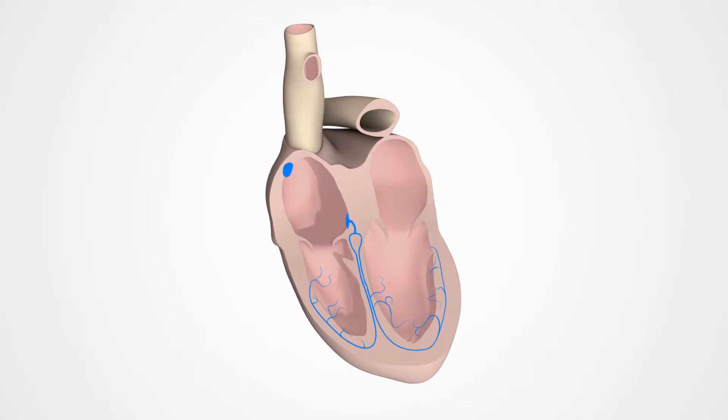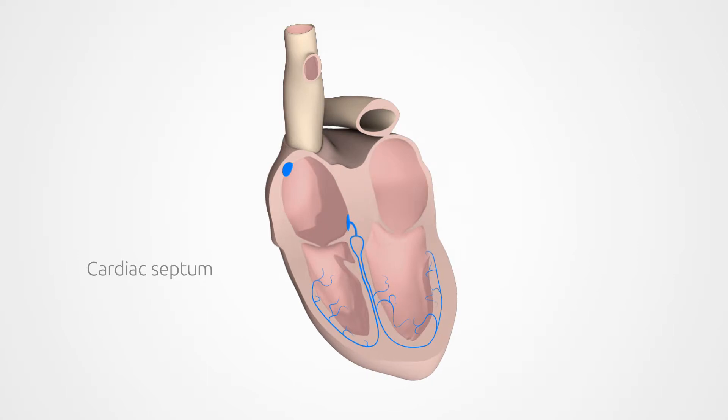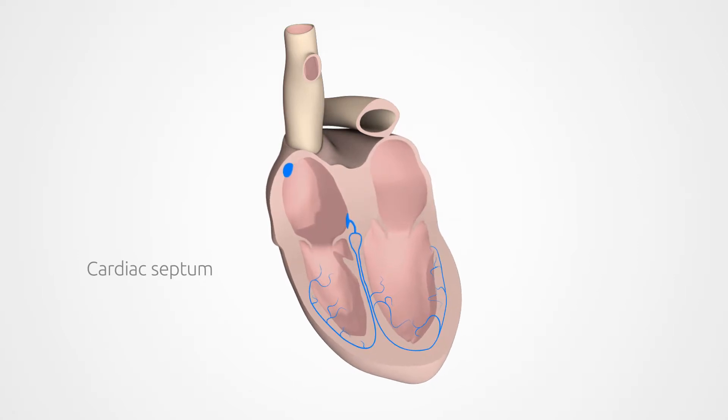A wall known as the cardiac septum divides the heart into right and left halves. Each half has two chambers, called the atrium and the ventricle.